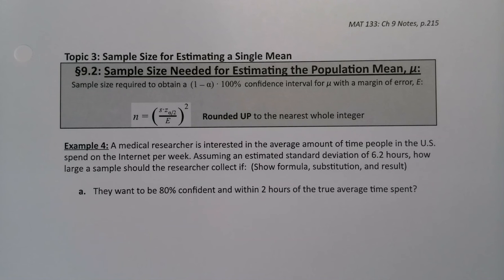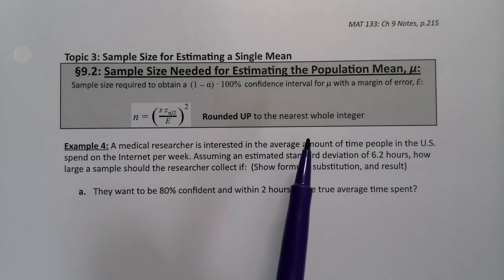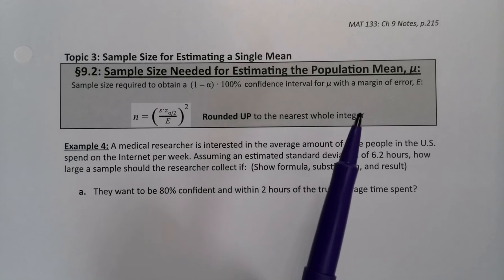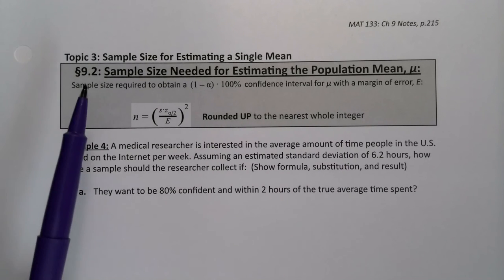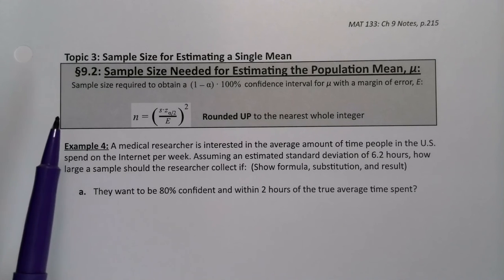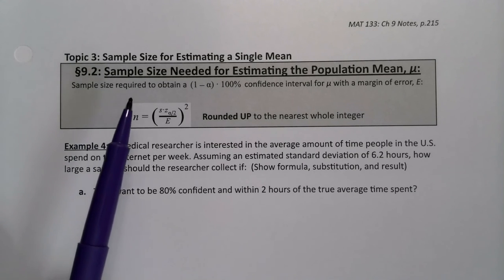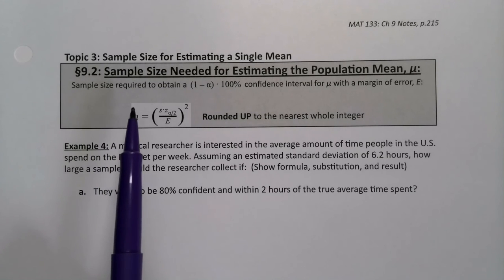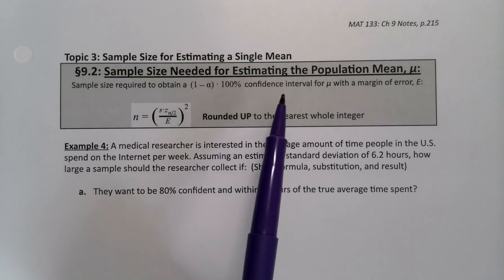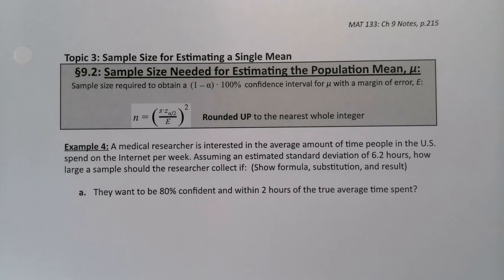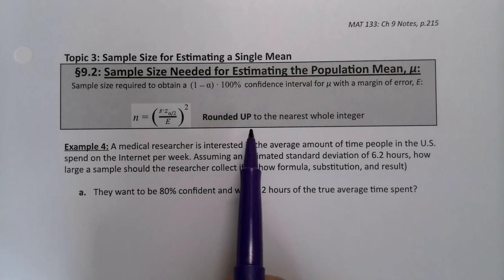So it's time to learn the other brand of sample size formula, which is the one involved with the population mean. This actually comes from section 9.2, but I've pushed it into this fake section 9 for convenience. The sample size required to obtain a confidence interval for mu with a margin of error E is n equals s times z alpha over 2 divided by the error squared, and you round up.